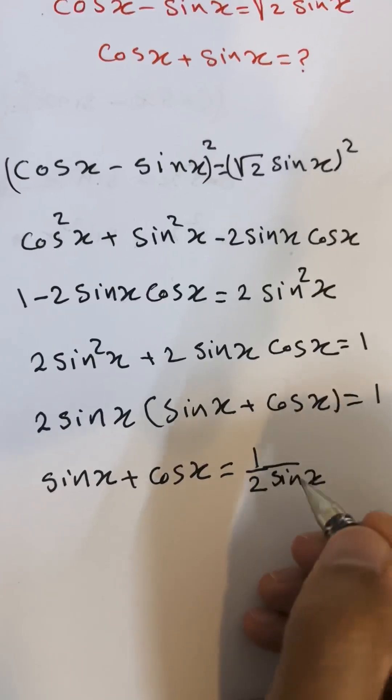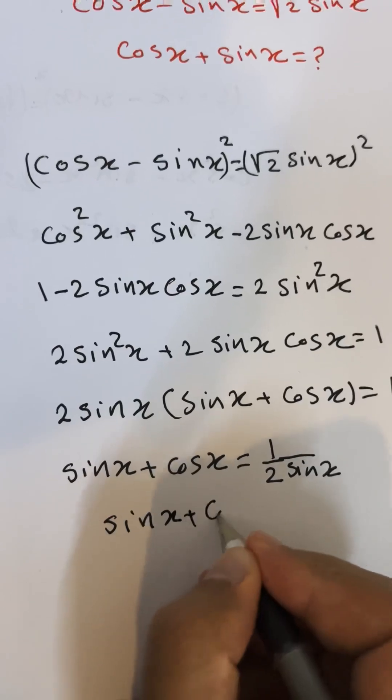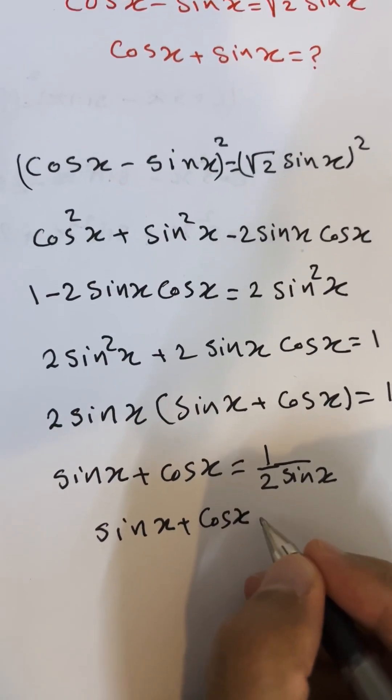And we know already what 1 over sine x is—cosecant, right? So here sine x plus cosine x equals...